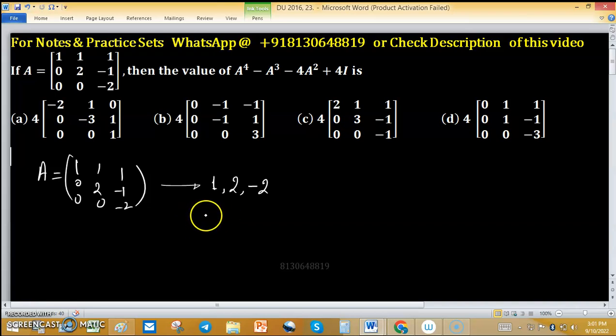The cubic polynomial looks like this: (x minus 2)(x plus 2)(x minus 1) equals 0.